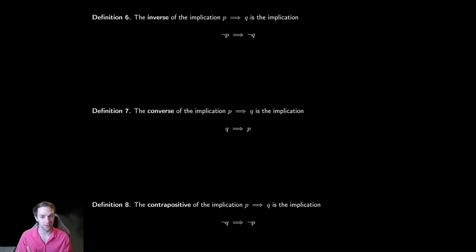So the first one's called the inverse, which is taking the original implication, which here we can see is p implies q, and looking at not p implies not q, so putting a negation in front of both of them. If we look at that, let's see what occurs. So we're going to create our truth table for p, q, and p implies q.